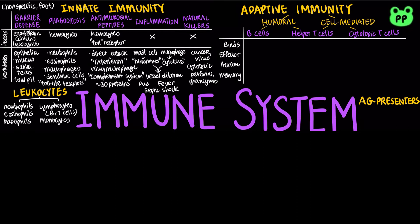Adaptive immunity, also known as acquired immunity, involves a slow, specific response to pathogens. There are two types: humoral response, which uses antibodies to defend against infection in body fluids, whereas cell-mediated response uses cytotoxic lymphocytes to defend against infection in body cells.